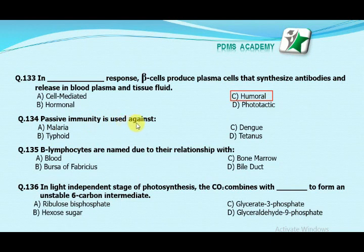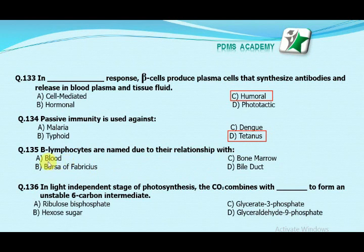Our next MCQ is: passive immunity is used against — Option A: malaria. Option B: typhoid. Option C: dengue. Option D: tetanus. Our correct answer is D, tetanus.